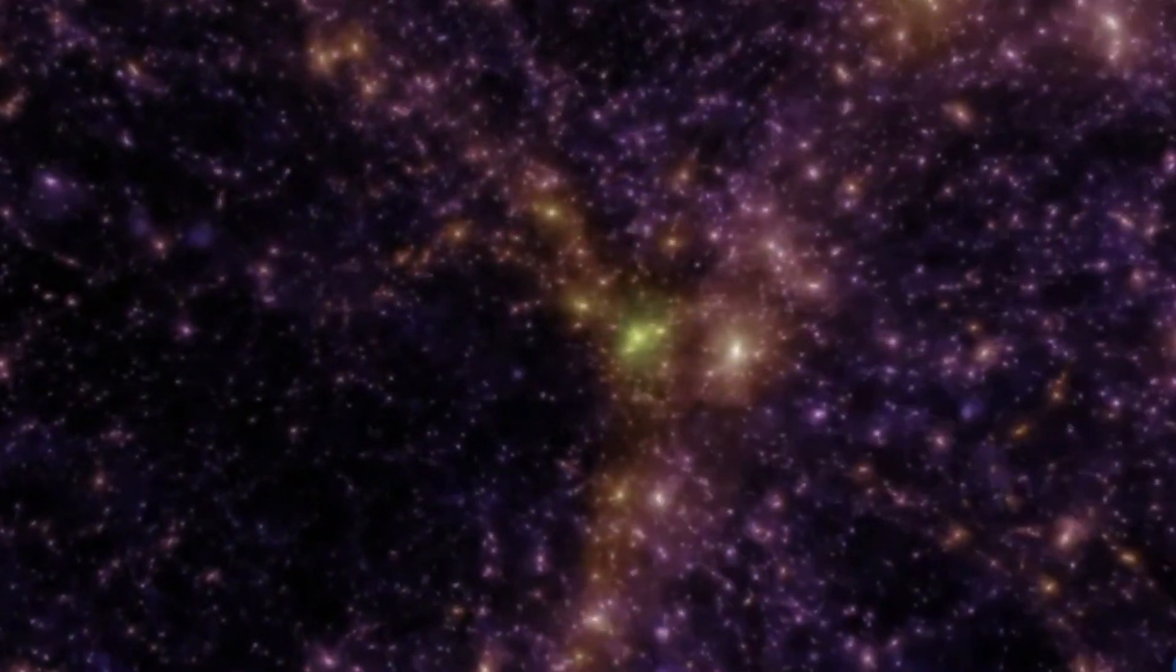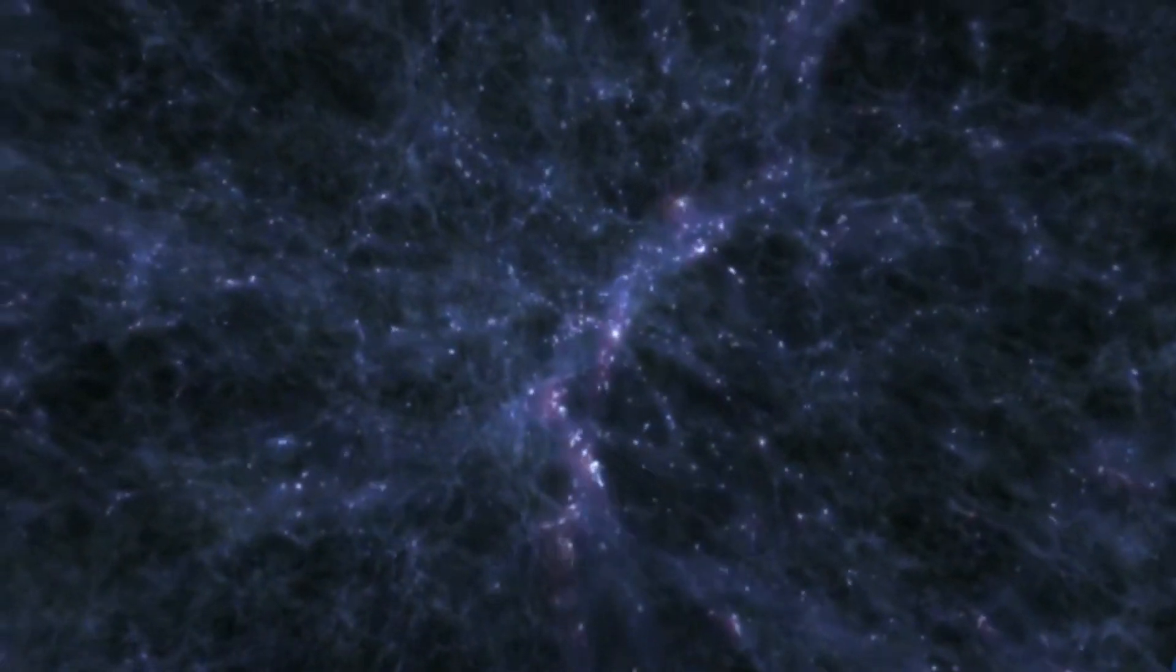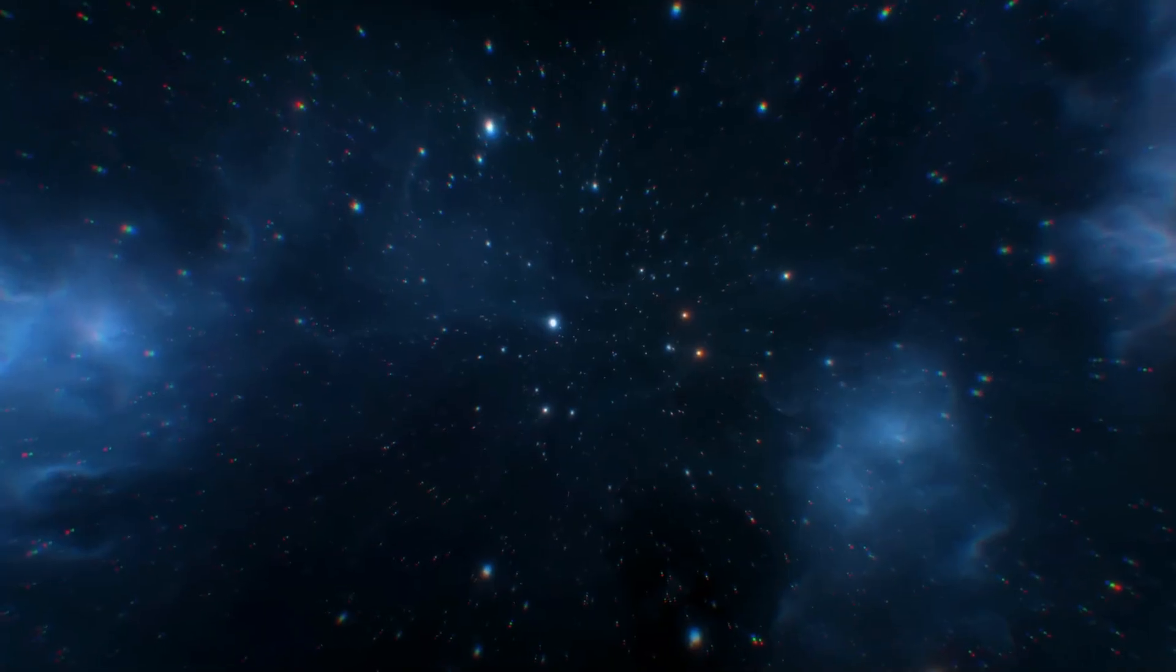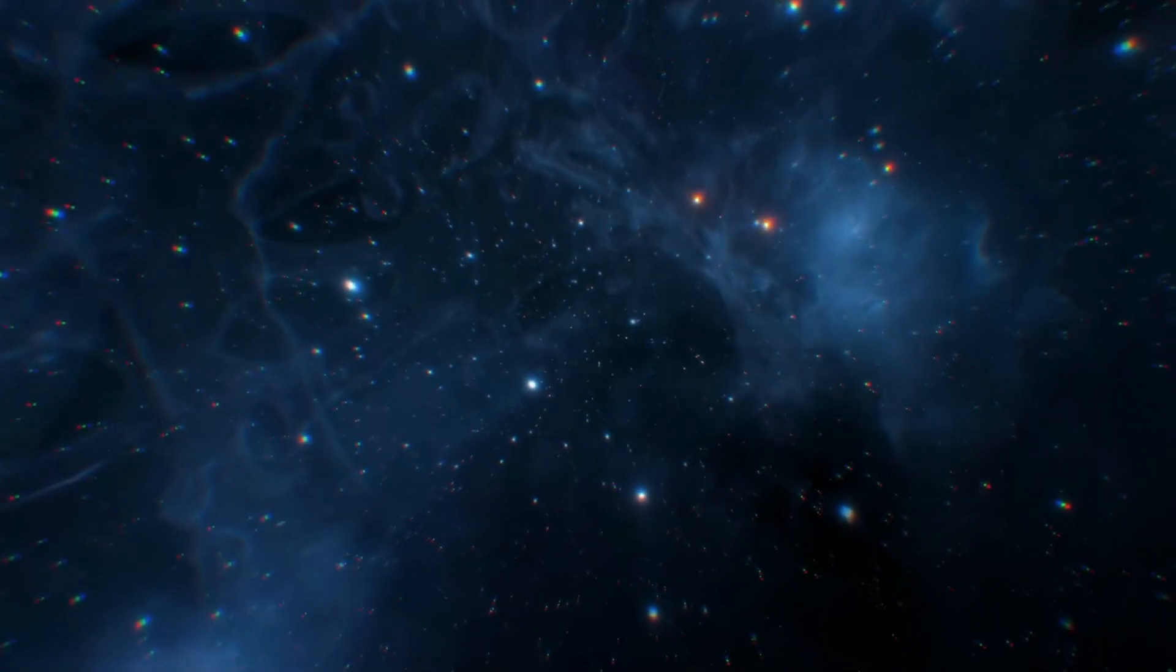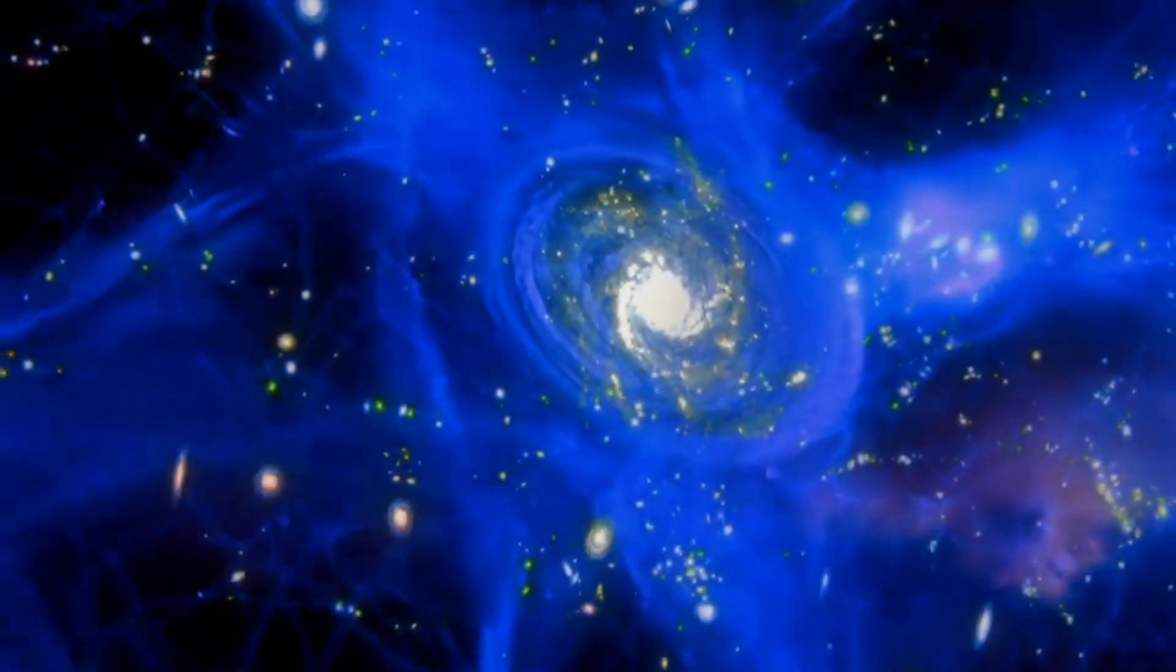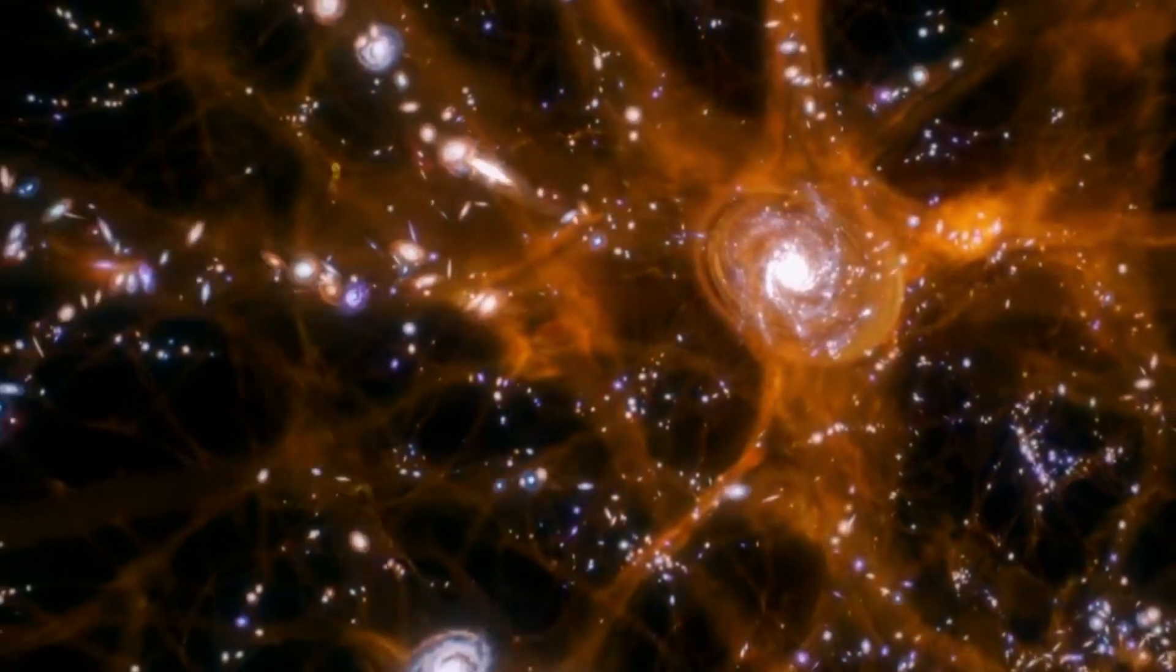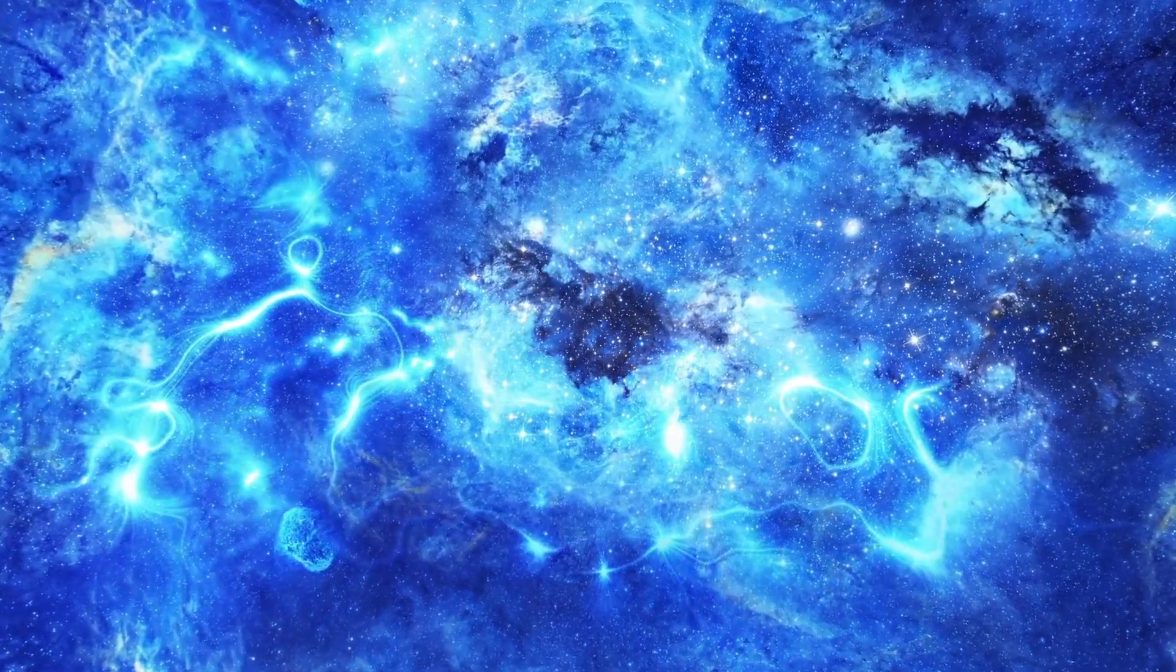In this context, the cosmic web theory becomes essential to understanding how galaxies are connected on such massive scales. According to the cosmic web theory, galaxies do not exist in isolation but form a vast, interconnected network. This network is composed of filaments of dark matter, the mysterious and invisible substance that exerts a gravitational pull, influencing the distribution and movement of galaxies. These dark matter filaments act like cosmic highways, along which galaxies travel and gather, eventually clustering at intersections known as nodes. These nodes can be massive, forming superclusters of galaxies like the Shapley supercluster.